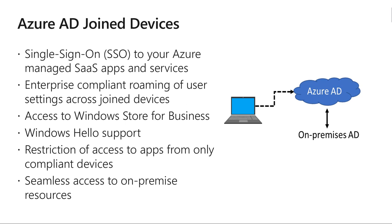Azure AD Join is designed to provide access to organization apps and resources and to simplify Windows deployment of work-owned devices. The benefits include: first, single sign-on to Azure-managed SaaS apps and services — users don't need to authenticate again, similar to how it works with laptops. This SSO functionality is available even when users are not connected to the domain network. Second, enterprise-compliant roaming of user settings across joined devices — users don't need to connect a Microsoft account. Third, access to the Windows Store for Business using their Azure AD account, choosing from an inventory of applications pre-selected by the organization.